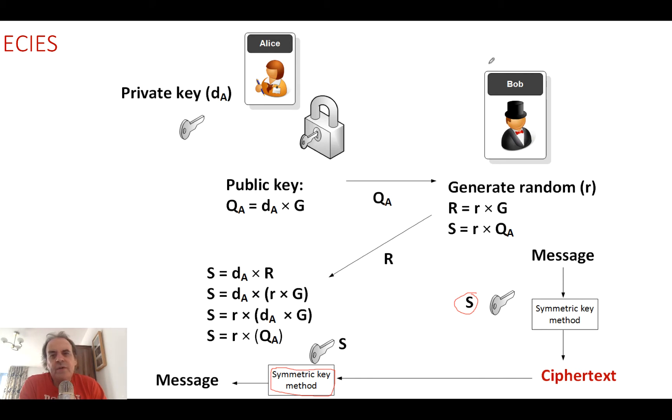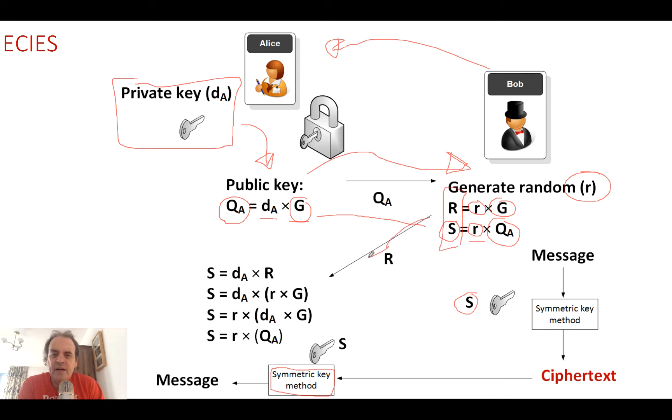Bob is going to send to Alice. Alice generates her private key, that's a random number, and then multiplies it by the G value to get the points QA, which is our public key. She then passes that on to Bob. Bob generates a random number, calculates R which is the random number times G, and then calculates S which is the random number times Alice's public key. He now has two values S and R, so he passes R to Alice.